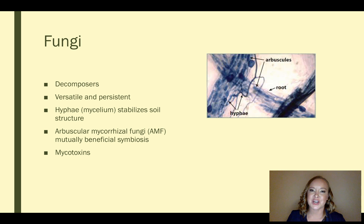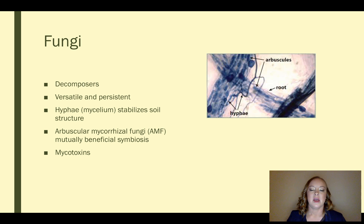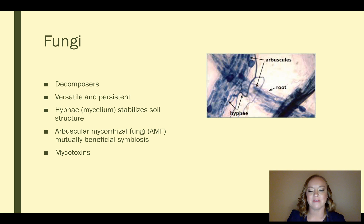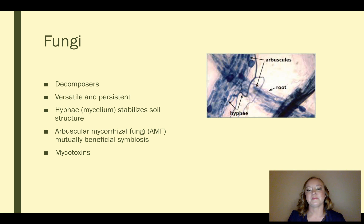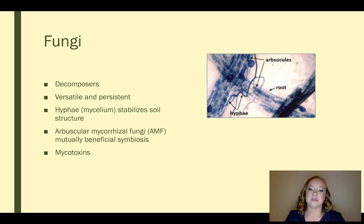Next we move on to fungi. Fungi are the main decomposers in the soil system — they are versatile and persistent, and sometimes they can live in areas that some bacteria cannot survive in. They have hyphae, which are the microscopic filaments that go through the soil. When you have a lot of microscopic filaments, they sort of create a network called mycelium, and this network of hyphae through the soil actually stabilizes the soil structure. One of the more commonly known fungi is arbuscular mycorrhizal fungi, also known as AMF, which can create a mutually beneficial symbiosis between the fungi and a plant. AMF is composed of arbuscules that are inside of the plant root and hyphae that go inside the plant root and outside back to the AMF, giving plants a broader network to access more water and nutrients, which the AMF and the plant share together.